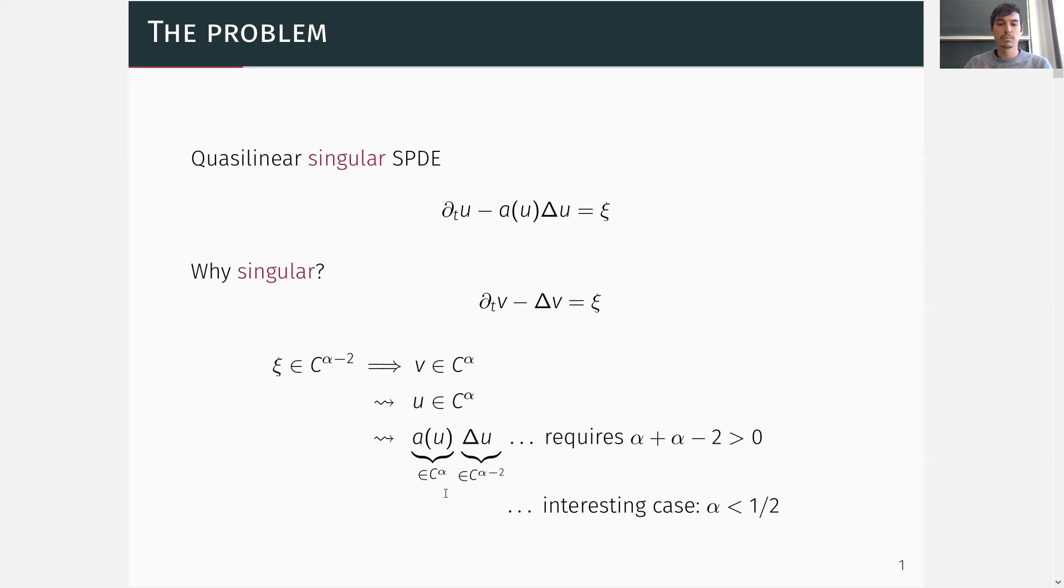However, the interesting case when ξ is space-time white noise in one spatial dimension corresponds to α being close to but less than one half. Hence, this product is ill-defined and it's not clear what the solution to this equation means.